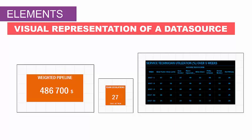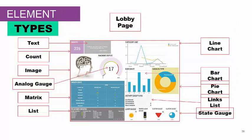Elements are created in the Element Designer screen and deployed onto a lobby. You can define the color, background, tile, tile visibility, and text color. The lobby element types available include text, counts, a specific image, gauge, a matrix of information, lists, line charts, bar charts, pie charts, a series of links to other screens, or state gauges that tell you information about your element.